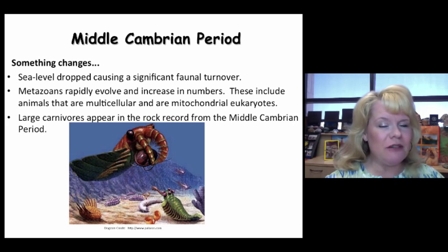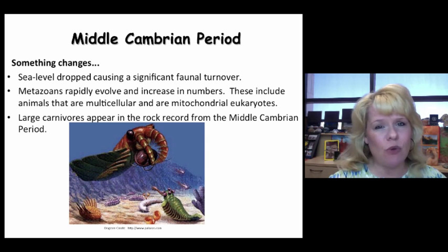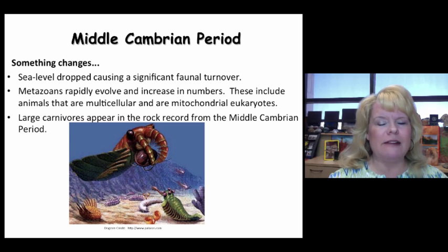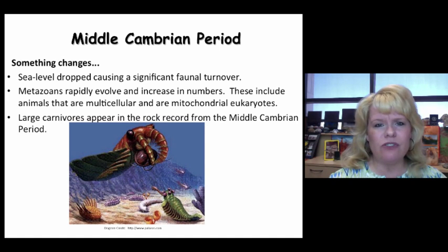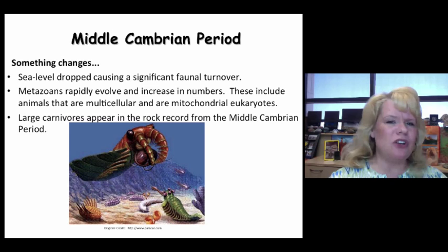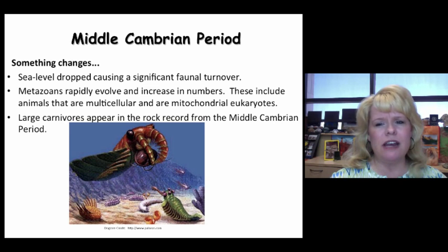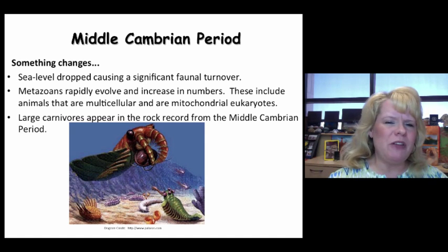Now we shift into the middle Cambrian — a big deal because it represents a time when very unique organisms evolved and we have a record of it that we really shouldn't, since many of these animals were soft-bodied. During the middle Cambrian, metazoans rapidly evolved, increasing in numbers, varieties, and body plan types. A metazoan is a multicellular animal containing mitochondrial DNA — they are eukaryotes — with very specialized cellular functions.